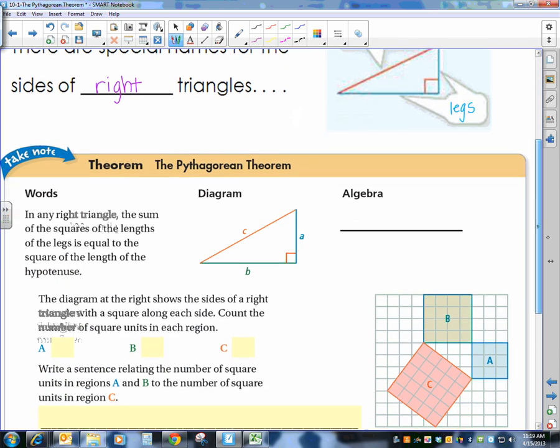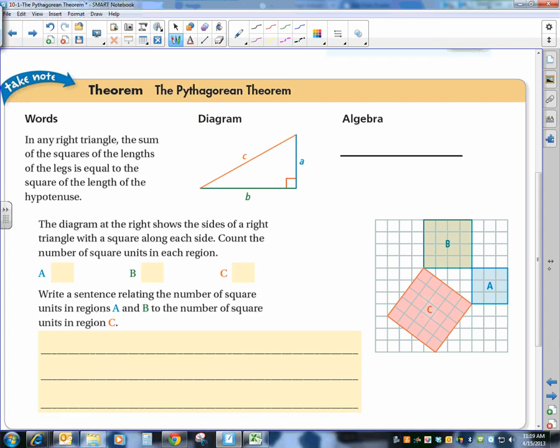We have a wonderful Greek mathematician named Pythagoras who discovered something called the Pythagorean Theorem. And he figured out that any right triangle that you have - if you will look at this picture that we have before I actually tell you what it is, look at the diagram. They want us to look at the diagram at the right and show the sides of the right triangle with a square along each side. So this inside portion, this is the right triangle they're talking about. And what they've done is they have put a square on each side of the right triangle.